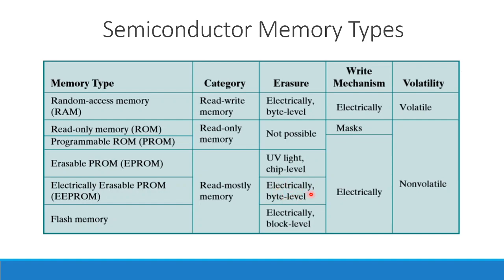EEPROM can be erased at the byte level and the write mechanism is electrical. Flash memory uses block-level erase — blocks are erased and the write mechanism is electrical. EEPROM and Flash memory are non-volatile. ROM, EEPROM, and Flash memory all fall under the 'read mostly memory' category.